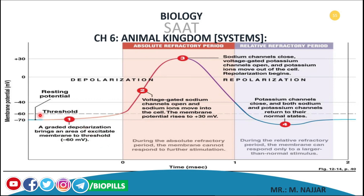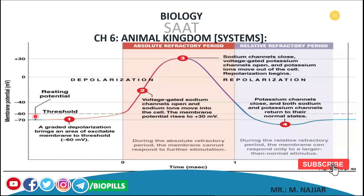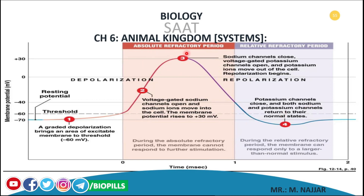But below that threshold level, there will not be detection for the impulse — there is no action potential to be taken. So they are saying all or none: it's been occurred more than the level of the threshold that the nervous system can detect it. If it's below this, there will not be any detection. Above the threshold, there will be an action potential.